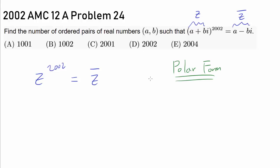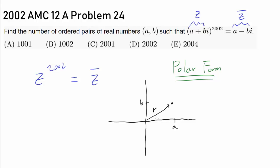So let's think about what's happening. We have some complex number A + Bi. We can think of it in polar form: we have the distance R and we have some angle θ. So this complex number is R times e^(iθ), which equals Z.